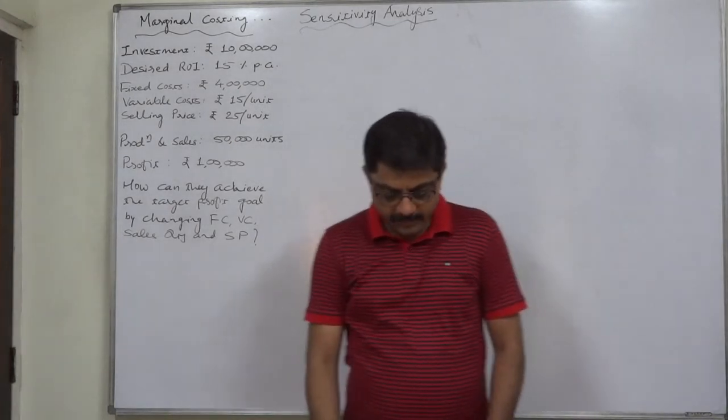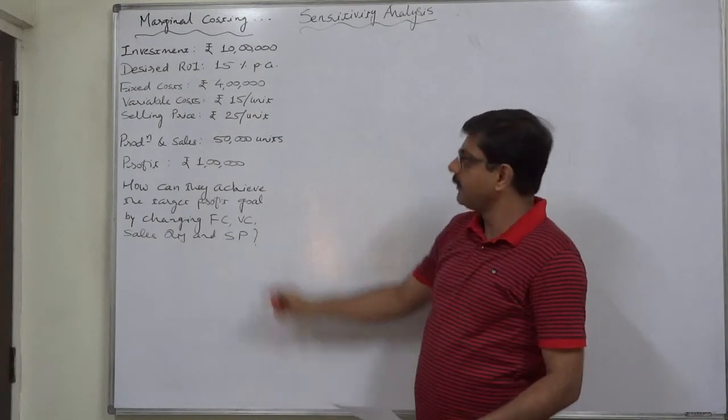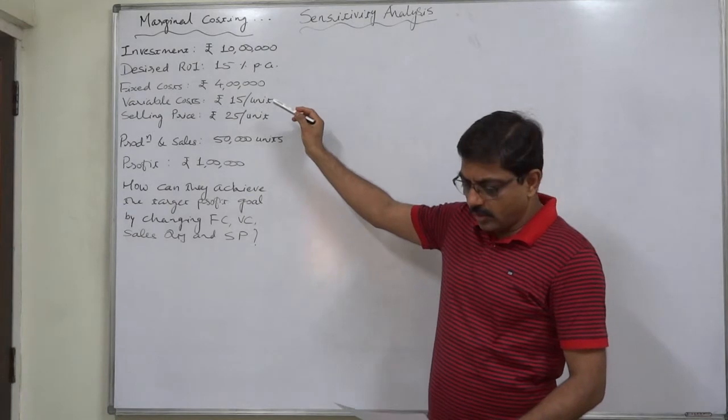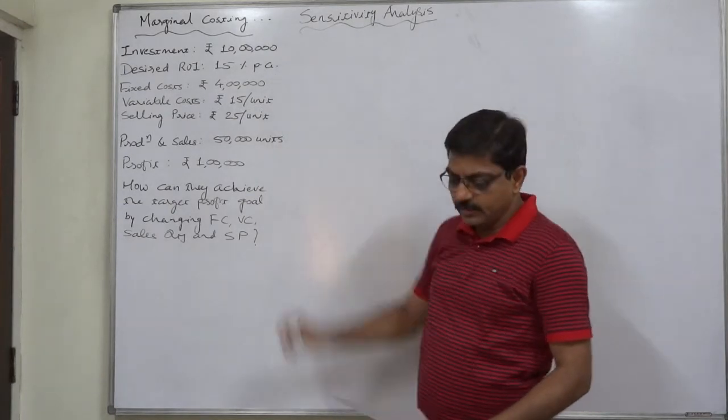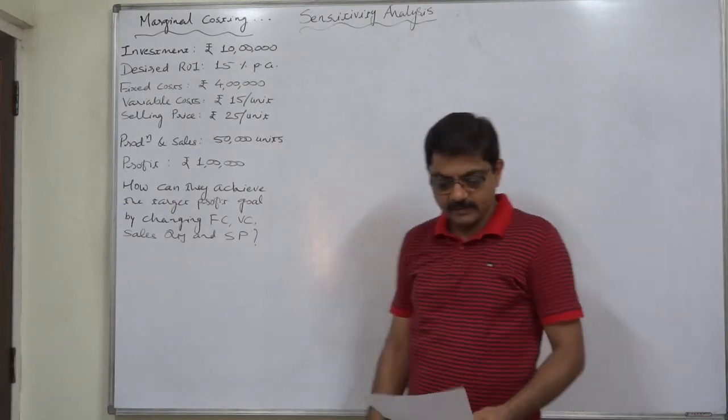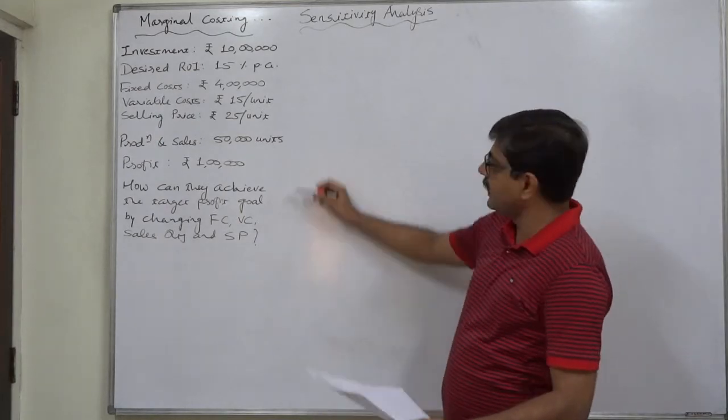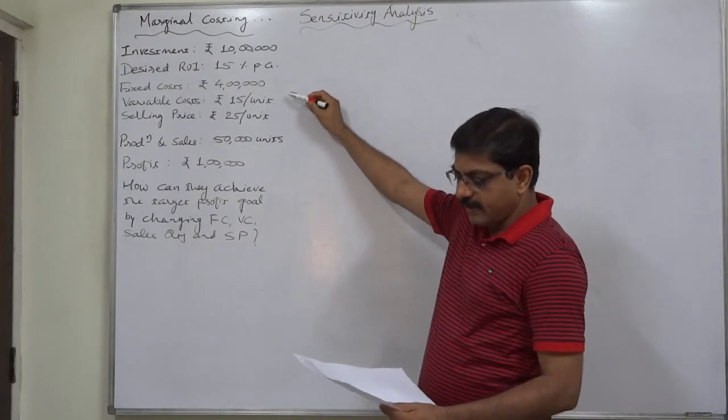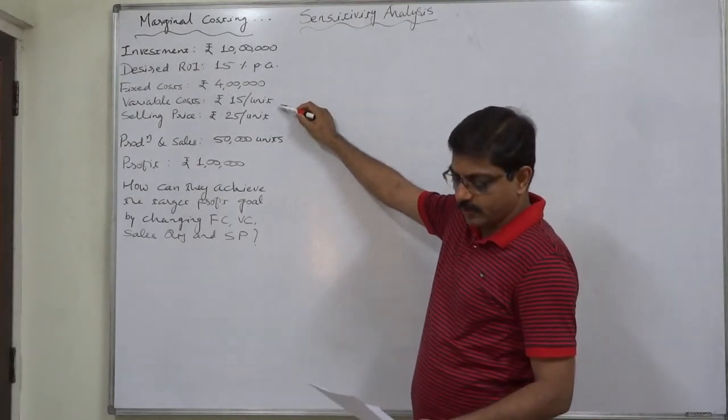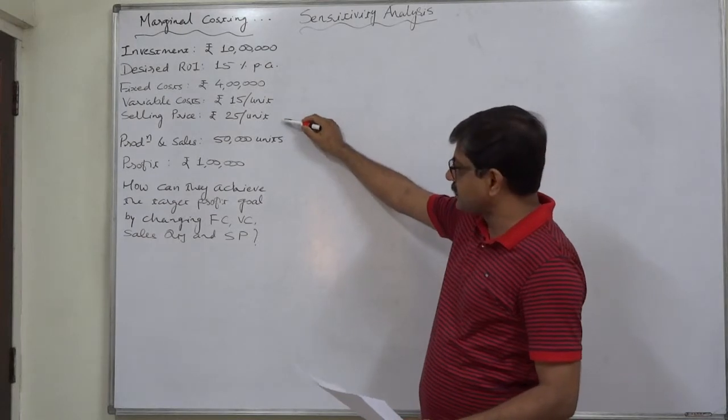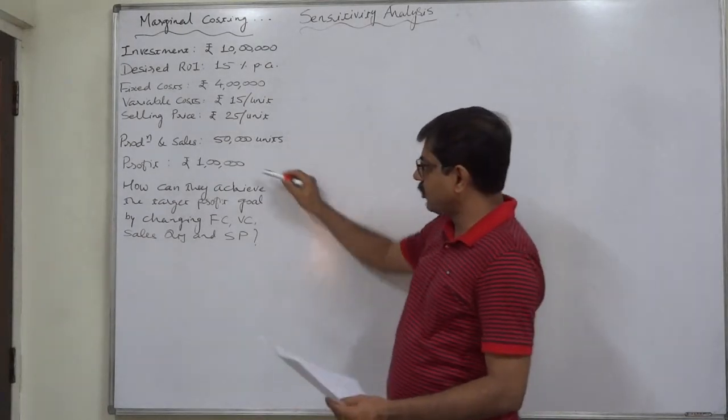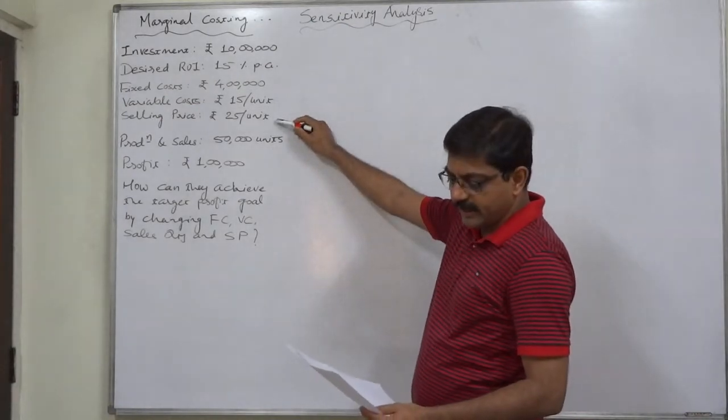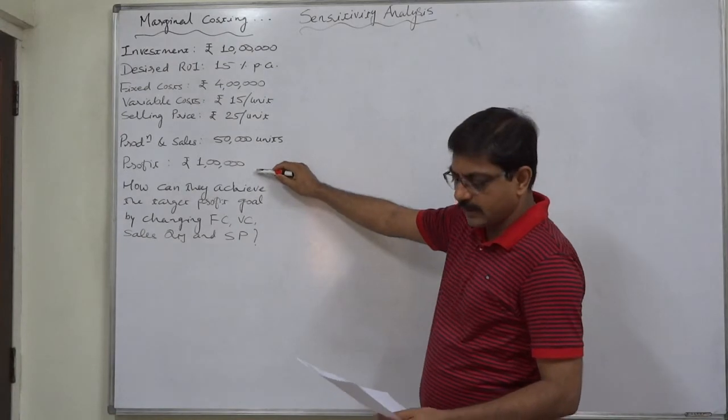The problem given is: a firm has rupees 10 lakh or 1 million invested in its plant and sets a goal of 15% annual return on investment. Fixed cost in the factory presently amounts to rupees 4 lakh per annum and variable cost amounts to rupees 15 per unit produced. In the past year, the firm produced and sold 50,000 units at the rate of rupees 25 each and earned a profit of rupees 1 lakh.